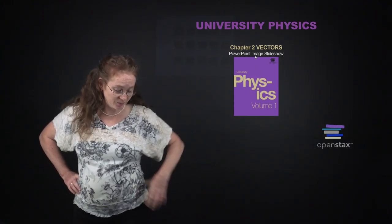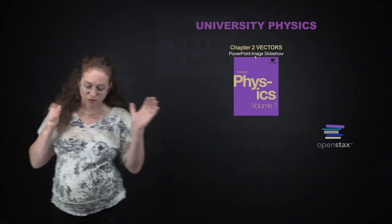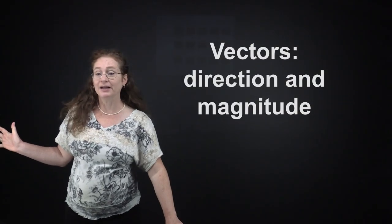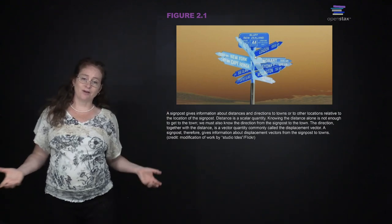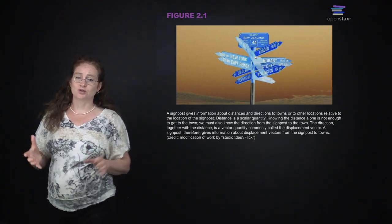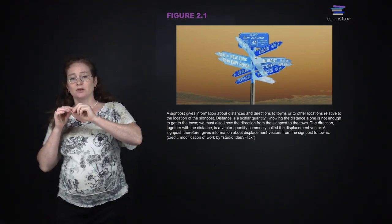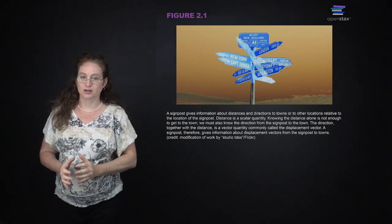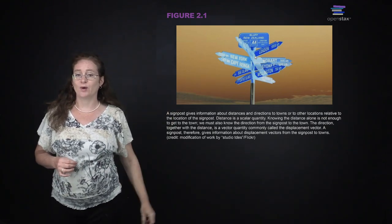We're going to be talking about vectors, which is how you describe the position and the direction of different types of motion. This is Chapter 2 of University Physics from OpenStax. So we're going to start with defining vectors - they are the mathematical way of giving a direction and a magnitude for something. An example of why you might need a vector is if you're talking about the displacement from where you are to another point in the world. A signpost gives you not just the direction, but the distance, and you need both.